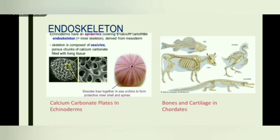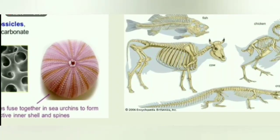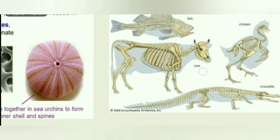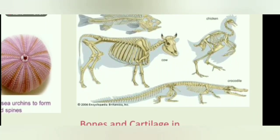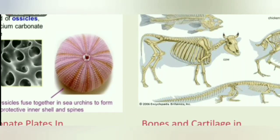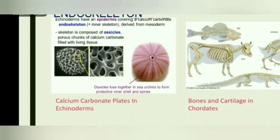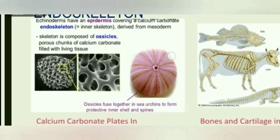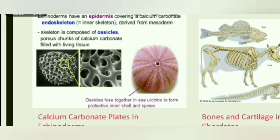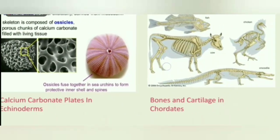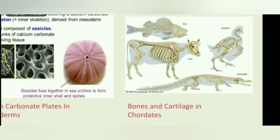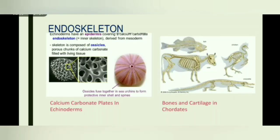The endoskeleton is a hard skeleton which is buried in the soft tissues of the animal. 'Endo' means inside, so the endoskeleton is the skeleton present inside the animal, buried inside the tissues. Different types of endoskeletons can be observed. In echinoderms, we have calcium carbonate plates as the endoskeleton. In chordates, we have bones and cartilage.